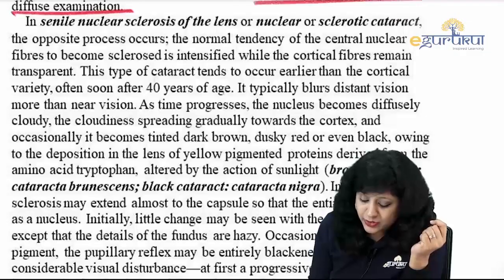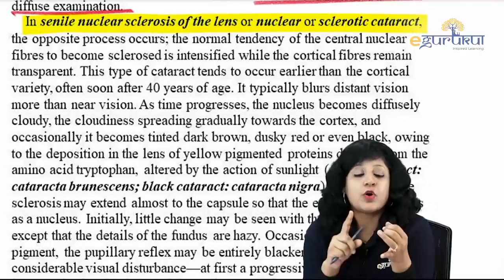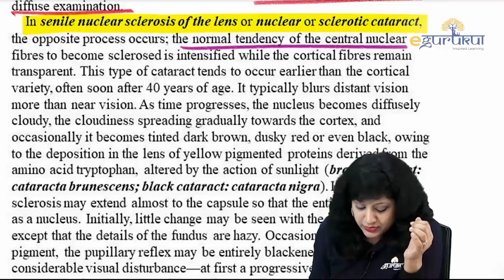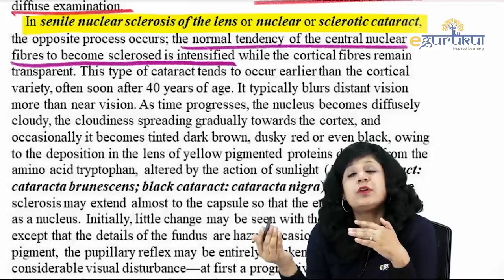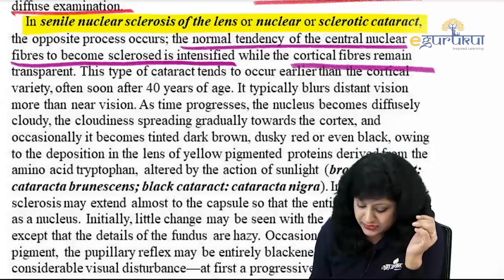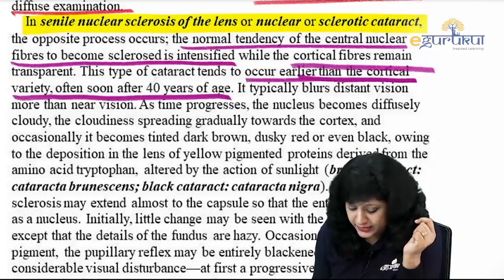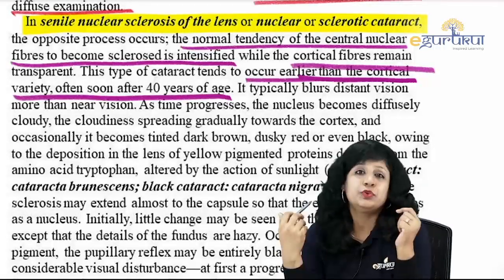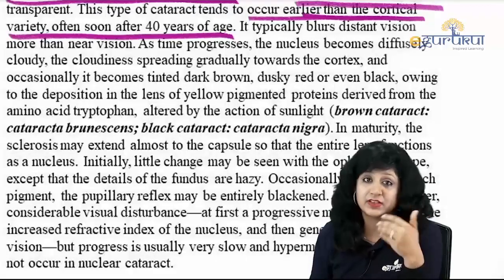In senile nuclear sclerosis, the normal tendency of central nuclear fibers to become sclerotic is intensified. More and more hardening of the nucleus takes place while the cortical fibers remain transparent. This type of cataract tends to occur earlier than the cortical variety — soon after 40 years of age. It typically blurs distance vision more than near vision; rather, there is an improvement of near vision due to progressive index myopia.